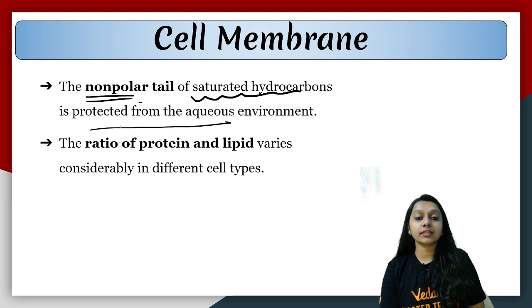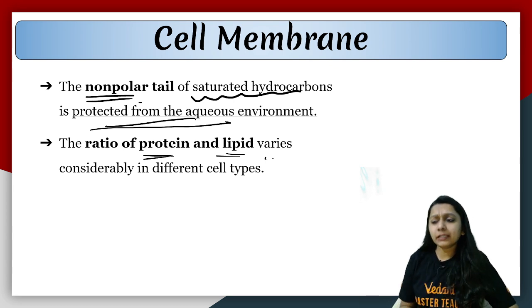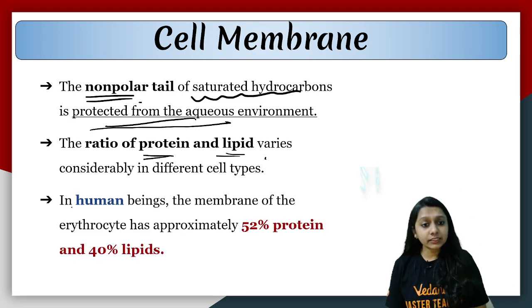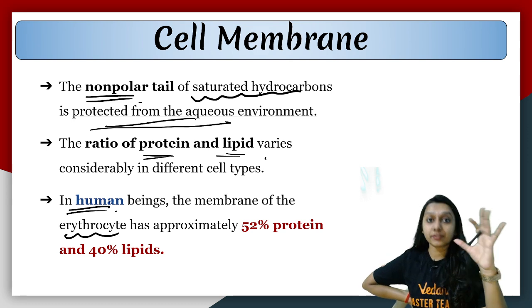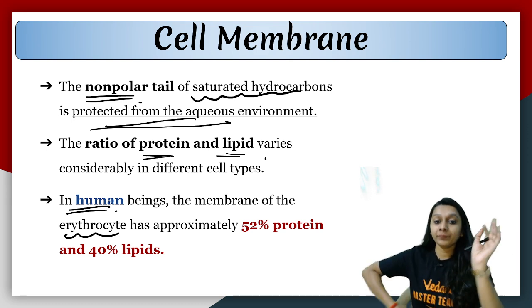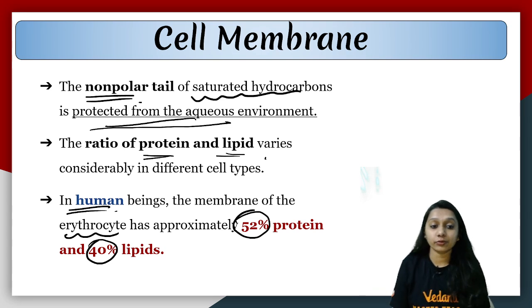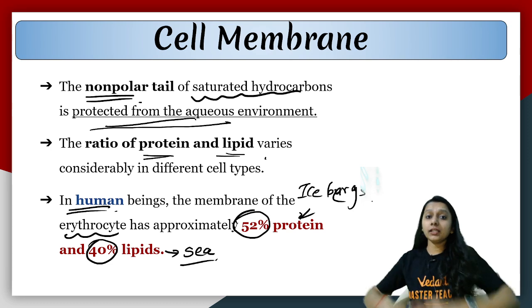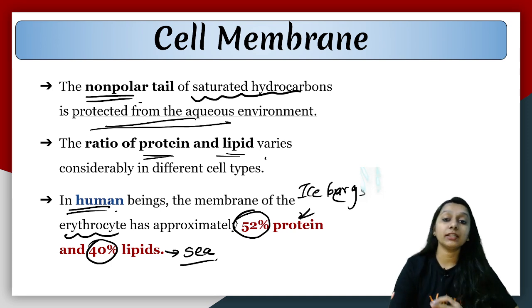The ratio of protein to lipid in a cell membrane depends on cell to cell. But if you look at a human cell — especially RBC (erythrocyte) — the protein component is 52% and the lipid component is 40%. You can imagine the lipids as the sea and the proteins as icebergs floating in it. So lipids form the continuous layer and proteins are embedded in them — that is the cell membrane structure.